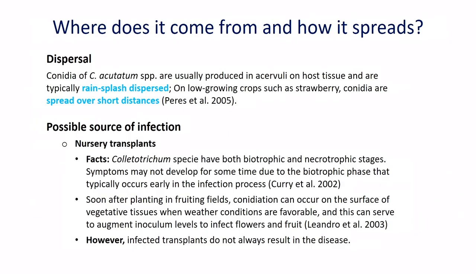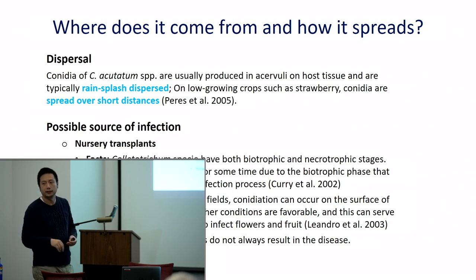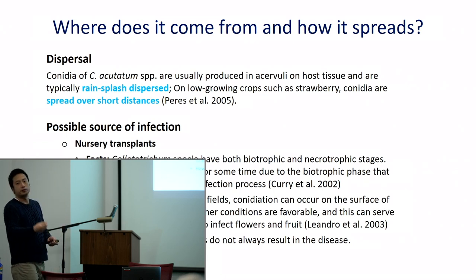Where does it come from and how does it spread? The conidia of Colletotrichum species are produced on host tissue and they are water-dispersed pathogens, which means they don't typically travel long distances. Nursery transplants are typically considered the primary source of inoculum for the disease, because the species have both biotrophic and necrotrophic stages. Symptoms don't show up for some time due to this biotrophic process, which typically occurs during the early part of infection — that's why the disease typically shows up later in the season.